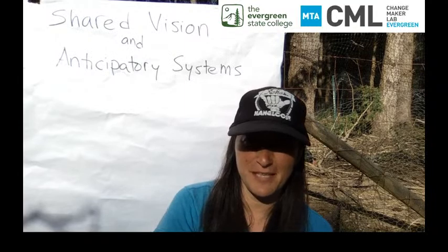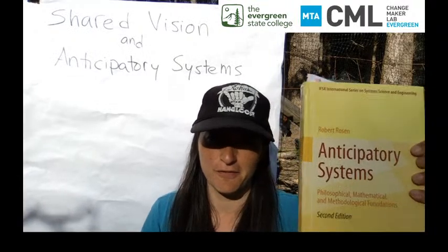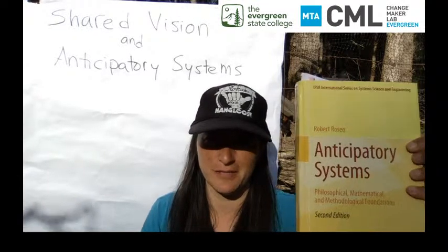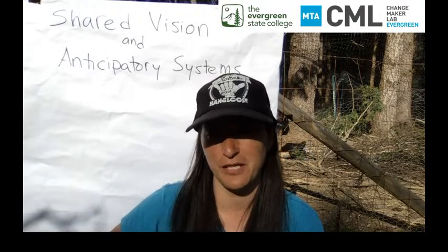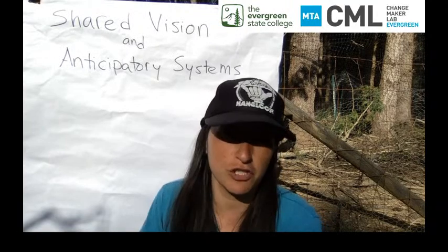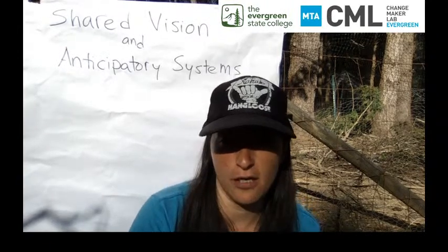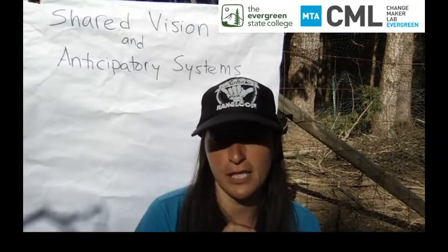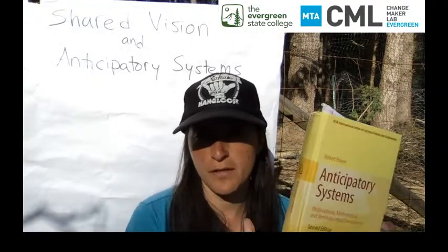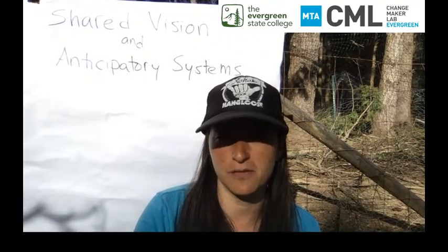Welcome everybody, College Math here coming at you from outdoors. Today we're going to talk about shared vision and mash it up with Robert Rosen's anticipatory systems theory. Shared vision is also known as your common why — in the world of strategic planning, creating that common why is called creating your shared vision. We'll start with a video by Peter Senge, pausing it at intervals and then showing how anticipatory systems theory plays into the creation of shared vision.